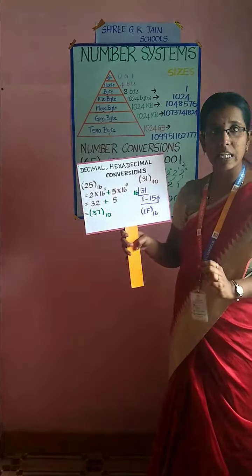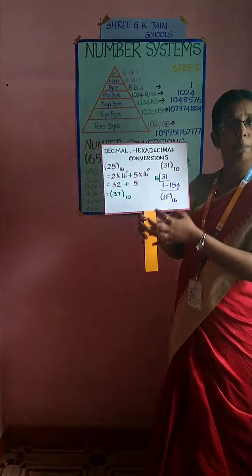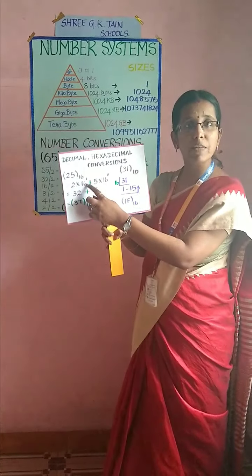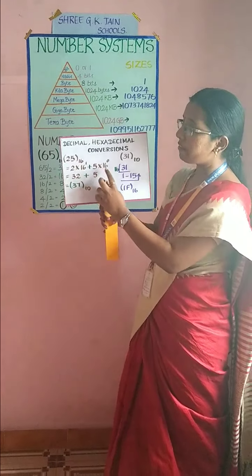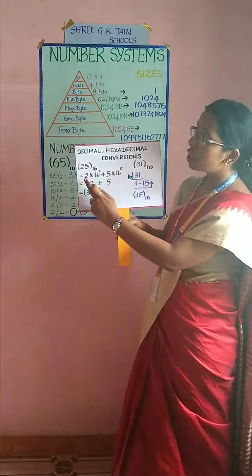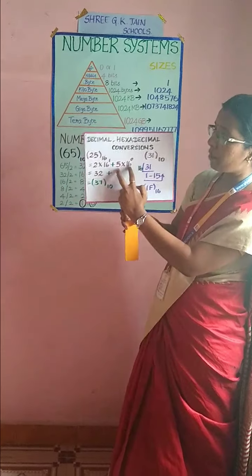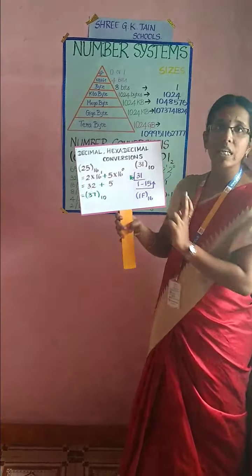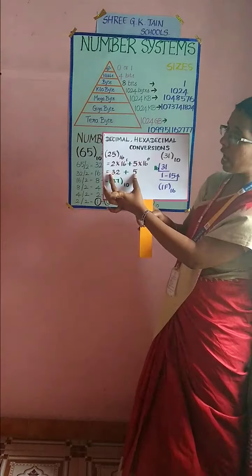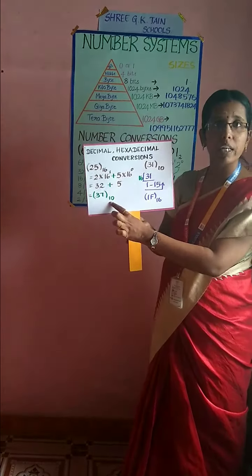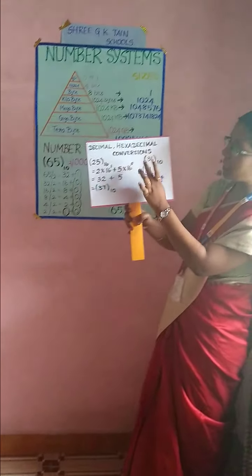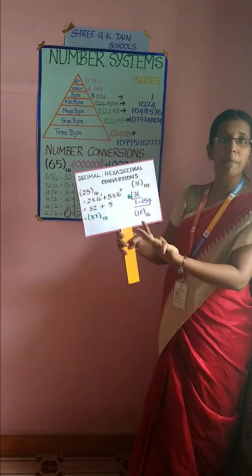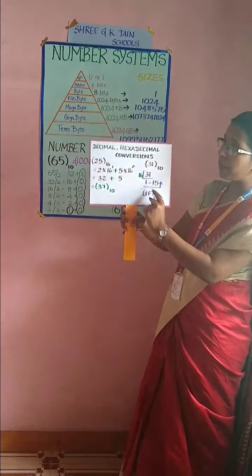The next method is decimal and hexadecimal conversion. Same way, if a hexadecimal number is given — for example, 25 base 16 — convert to decimal. We multiply with the base value raised to its place value: 5 × 16 power 0 = 5 × 1 = 5, and 2 × 16 power 1 = 2 × 16 = 32. Add the two numbers, and this gives your equivalent decimal number.